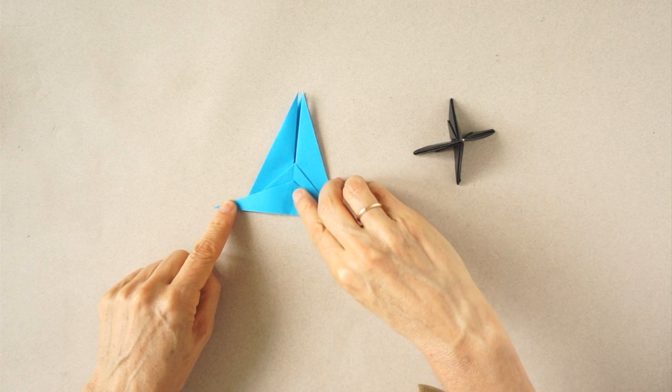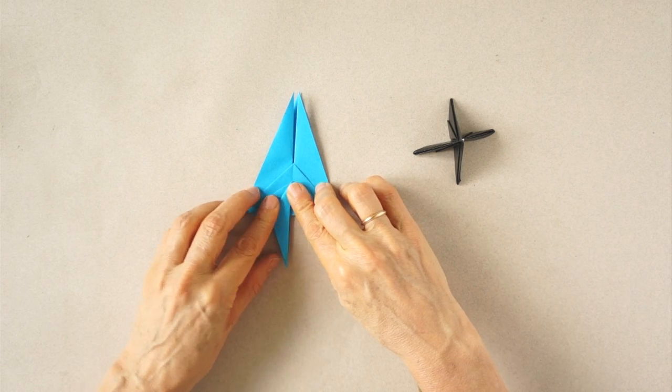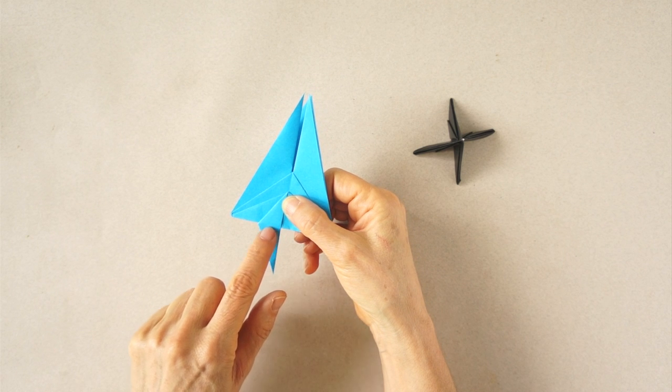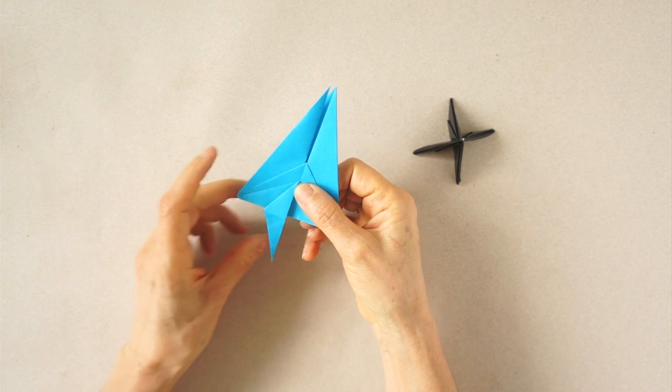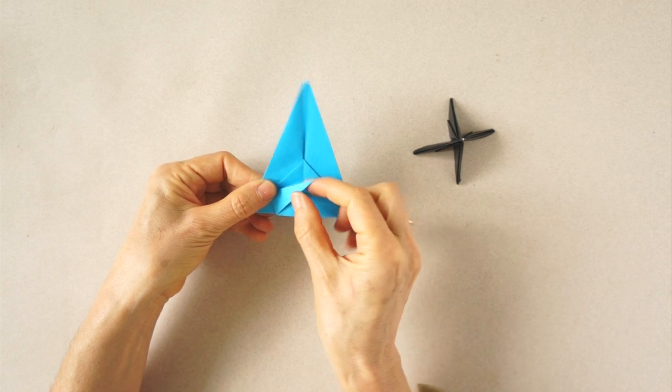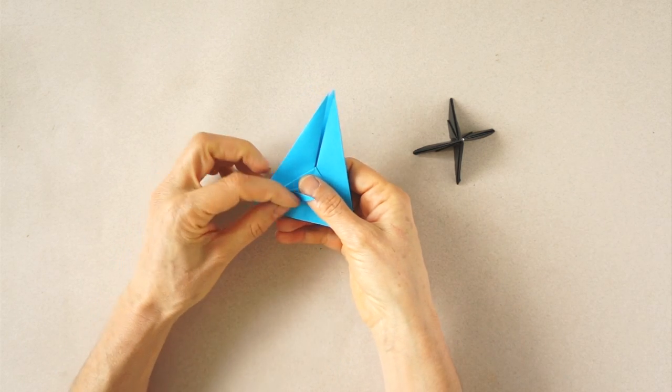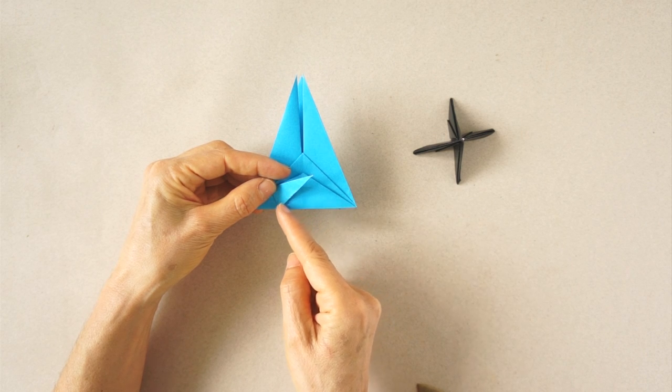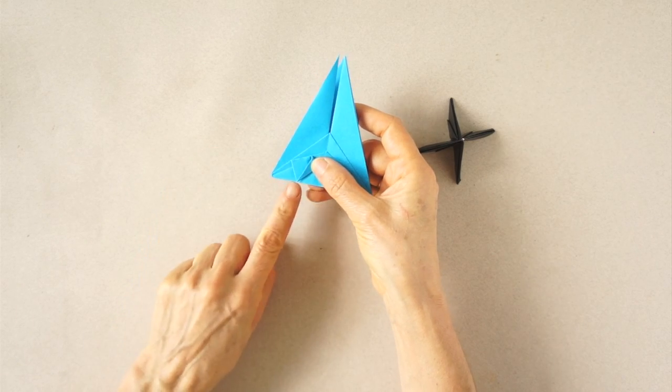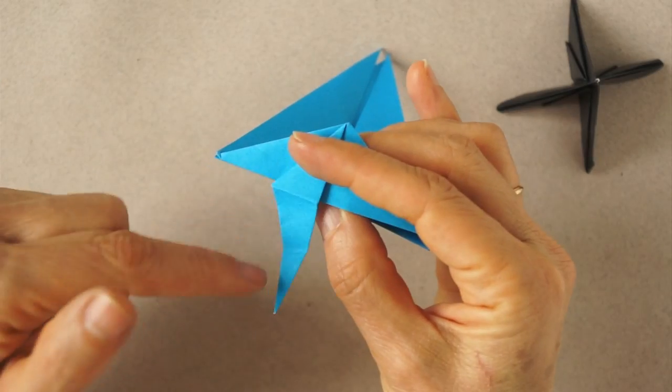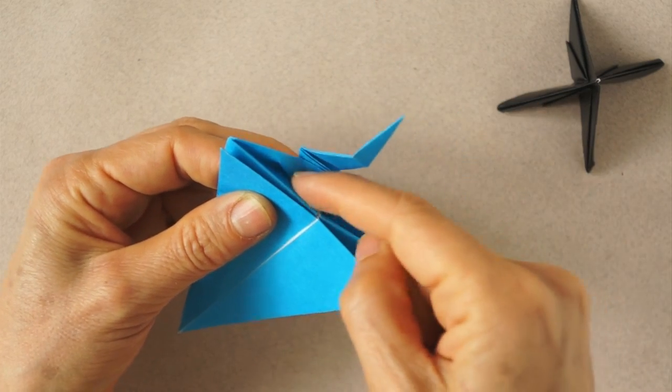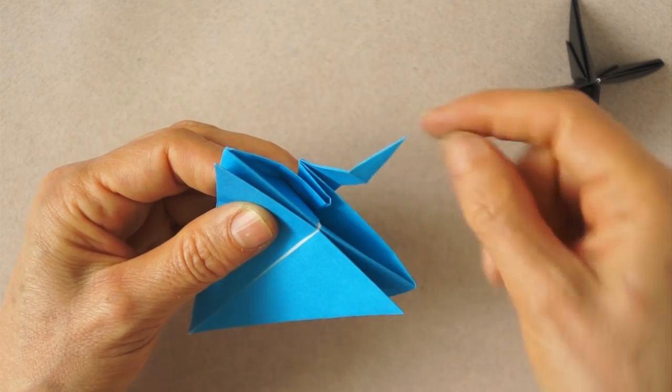We bring this edge along this vertical central line. Now we are going to press this and fold along the lower edge. Then we unfold and refold that. And this tip we are going to bring it to the left again. And this edge will match itself. And the point comes all the way to here. Fold this inside.